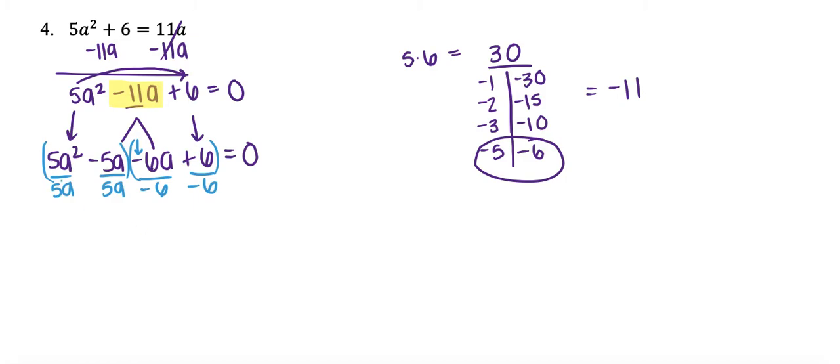From here my GCF goes out in front, and then I'm going to divide these to get my inside my parentheses. So 5a squared divided by 5a, I just get a. Negative 5a divided by 5a, same on top and bottom, so I'm just going to get a minus 1. Here my negative 6 comes out in front, and I get a minus 1 as well. Now I know I'm doing it right because both of these are the same. So I'm going to take my GCFs and they're going to go into their own parentheses, and then my a minus 1.